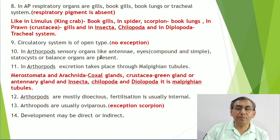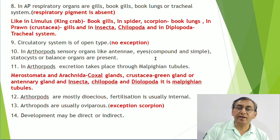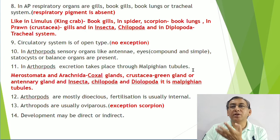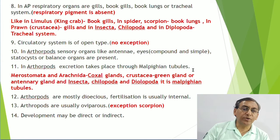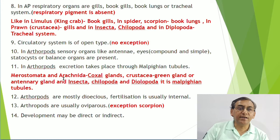Different excretory structures in arthropods: Limulus (king crab) has myriapoda-like structures; Arachnida (spider, scorpion) have coxal glands; Crustacea (prawn) have green glands or antennary glands; Insecta, Chilopoda, and Diplopoda have Malpighian tubules. Arthropods are mostly dioecious, fertilization is usually internal, they are mostly oviparous with one exception - scorpion, which is viviparous. Development may be direct or indirect.